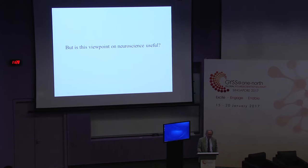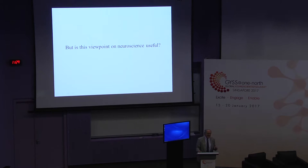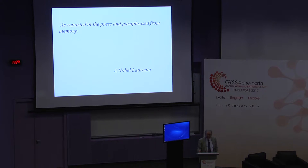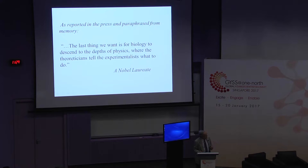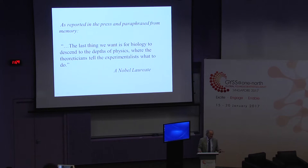Neuroscience is notorious for actually disliking theories of any kind. Sir Cajal, the founder of modern neuroscience, wrote a famous book called Advice to a Young Scientist with a chapter very negative on theoreticians. A Nobel laureate in biology once said: 'The last thing we want is for biology to descend to the depths of physics.' This isn't an atypical view from traditional biologists, who really believe in working from observations up and believe top-down theorists don't have much to contribute.